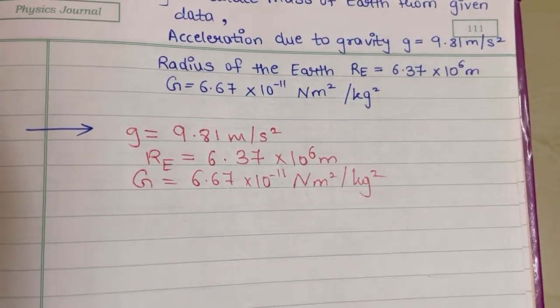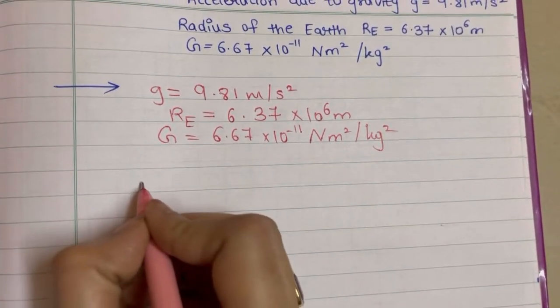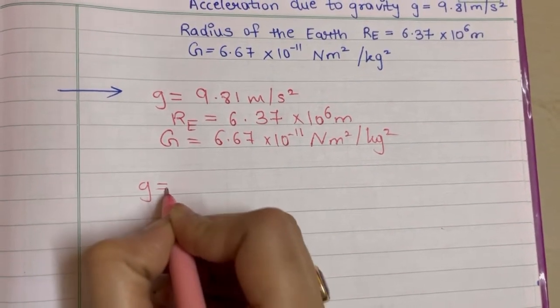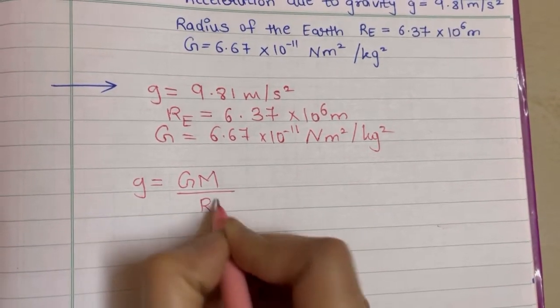If you notice every unit is in SI form, so there is no need of conversion. We'll directly go to the formula of acceleration due to gravity, that is capital G, M upon r square.